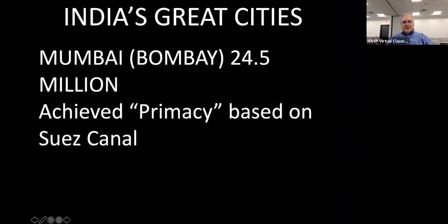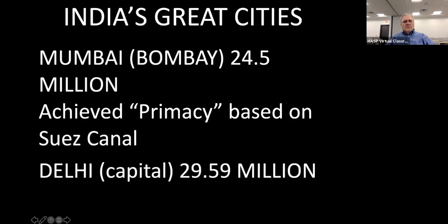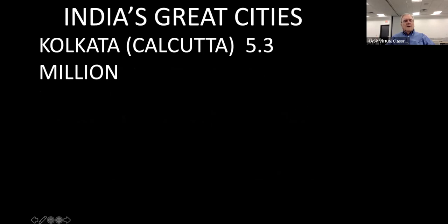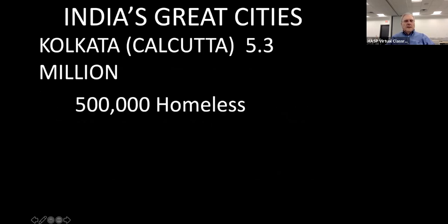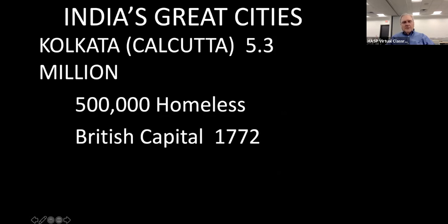Let's go through some big cities. Mumbai, which was Bombay, has 24 million people — it achieved primacy based on the Suez Canal. Delhi is the capital with 29 million. Then you have Kolkata — Calcutta was the British name — with only 5 million. In Kolkata, half a million are homeless. It was the British capital until 1772, and the town was adversely affected by the partitioning of India.